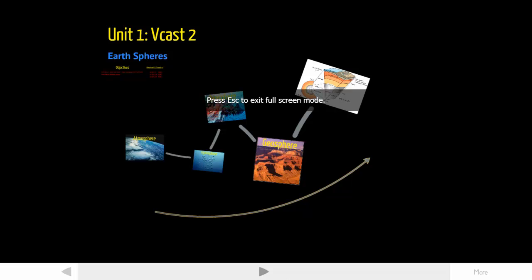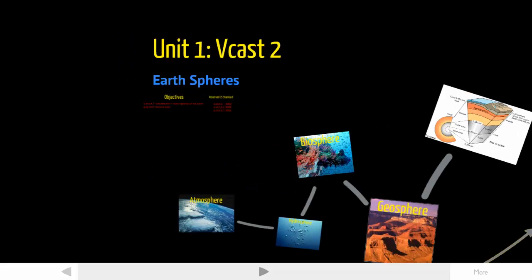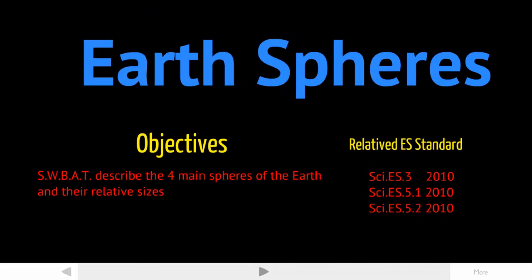Alright, so this is VODCAST 2 of Unit 1. Last time we looked at the Earth sciences and the scientific method. This time we're going to look at the Earth spheres, and hopefully after this and the activity that goes along with it, you're going to be able to describe the four main spheres of the Earth and their relative sizes to one another.